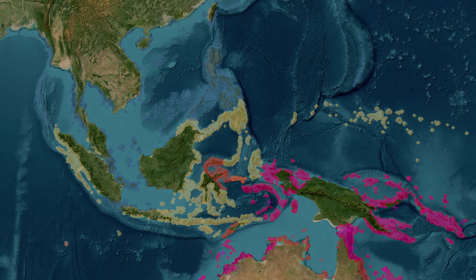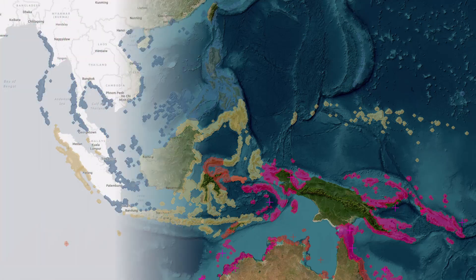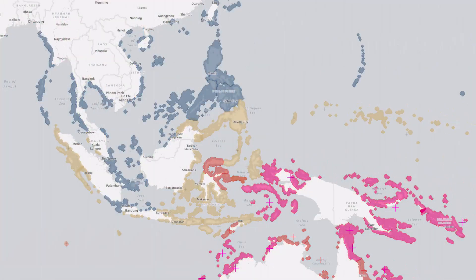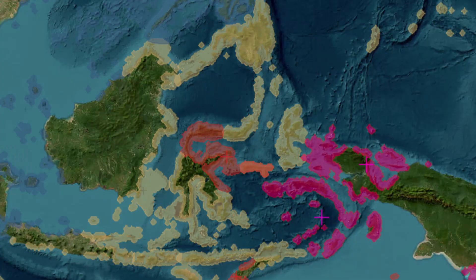Many times, the easiest way to improve a map is to change its base map. Hi, I'm Heather and I'm a cartographer. In this video, I'll show you how to choose a base map.